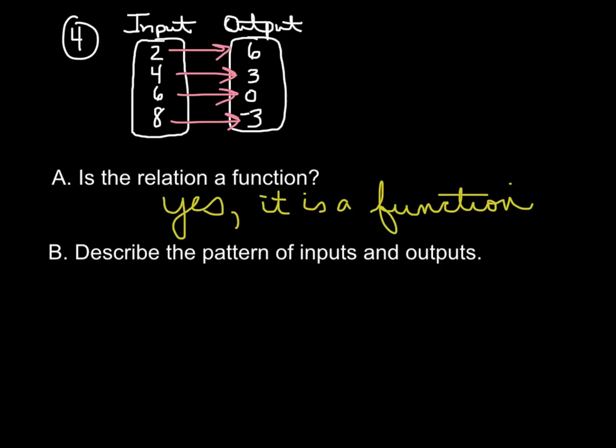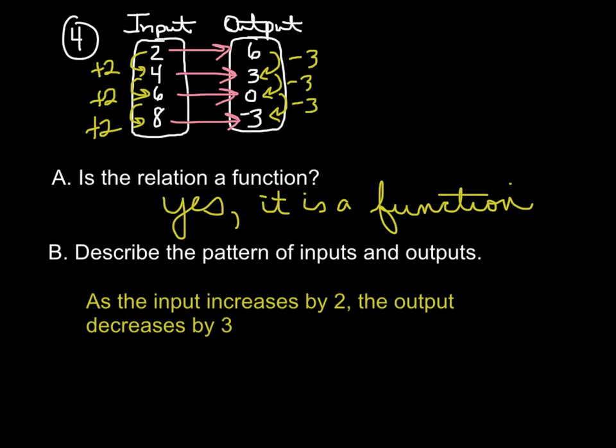Describe the pattern. If we look at our inputs, our inputs increase by 2 each time, and our outputs decrease by 3. So what we can say is: the input increases by 2, the output decreases by 3.